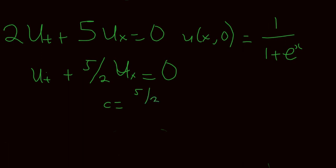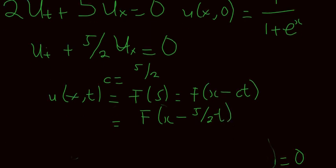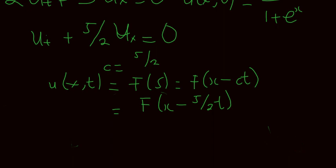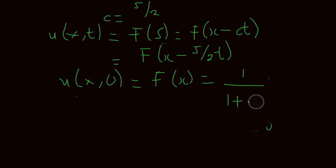My solution u(x, t) is just going to be a function of s, where s is x minus ct and my c is 5/2. So that's going to be f of x minus 5/2 t. With my initial conditions, u(x, 0) gives f of x equal to 1 divided by 1 plus e to the power x.